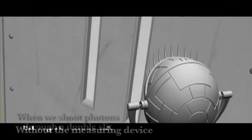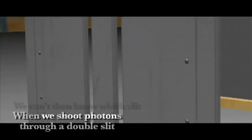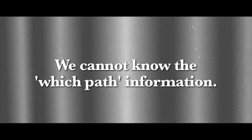Without the measuring device, when we shoot photons through a double slit, we can't then know which slit they went through, or which path they took. So in other words, we cannot know the which-path information. Now for reasons we'll discuss later, because we can't know which slit it went through, the photon acts as a wave and goes through both slits, interfering with itself and creating an interference pattern.